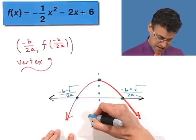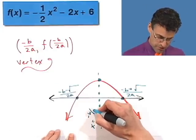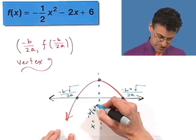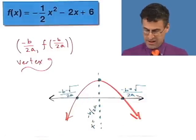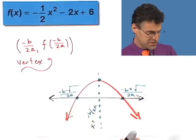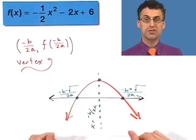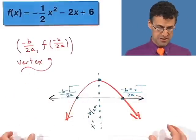So x equals negative b over 2a represents the axis of symmetry of any parabola — it's just the average value of the two solutions. Really, really easy. Let's apply it now to this particular example to figure out exactly where that vertex is.